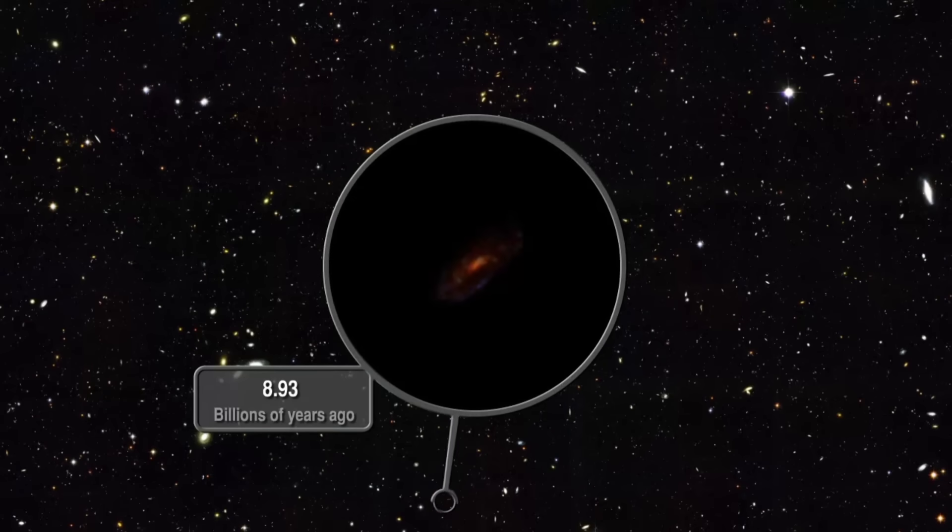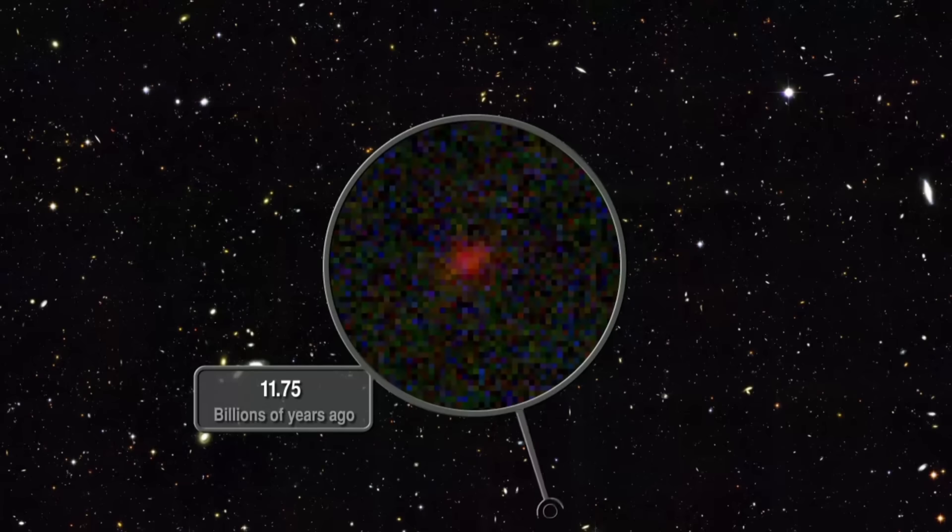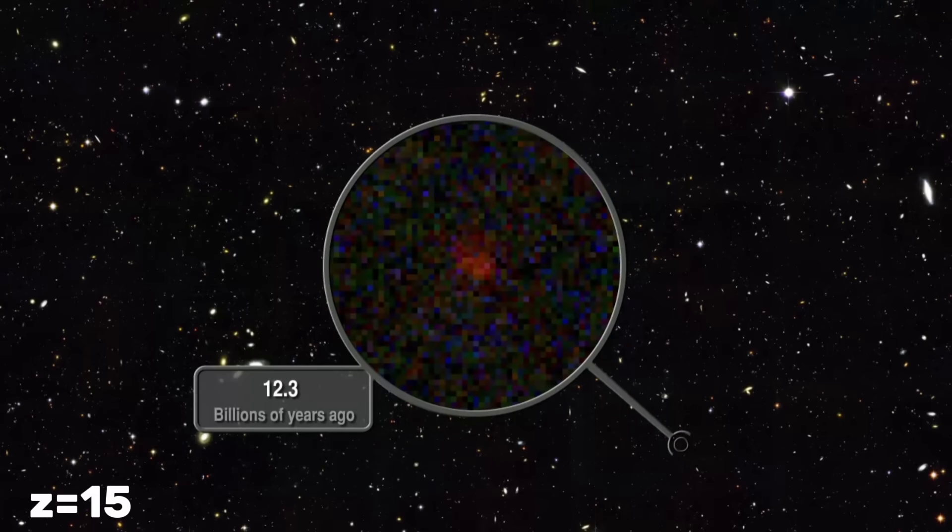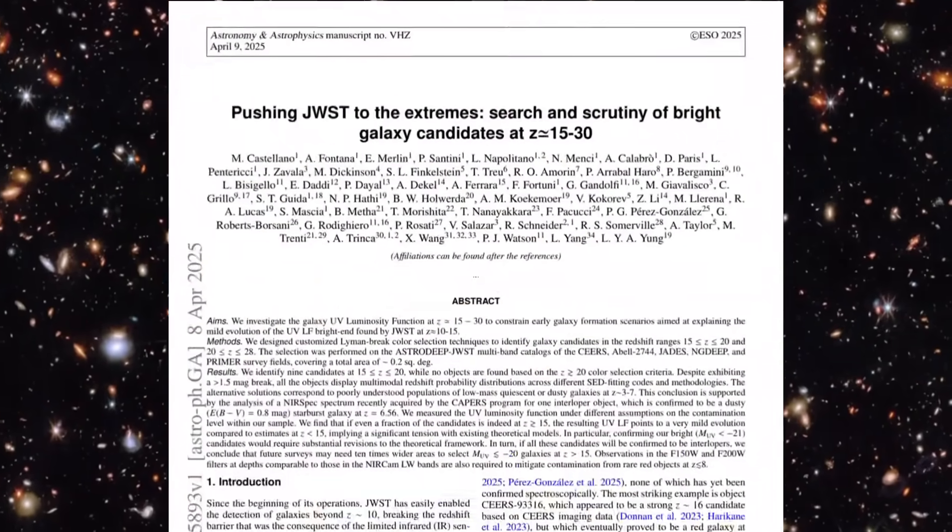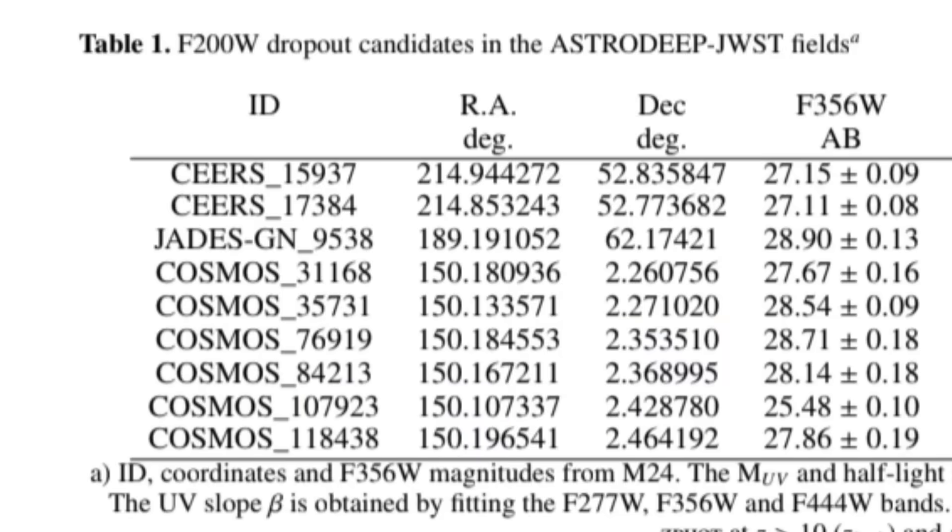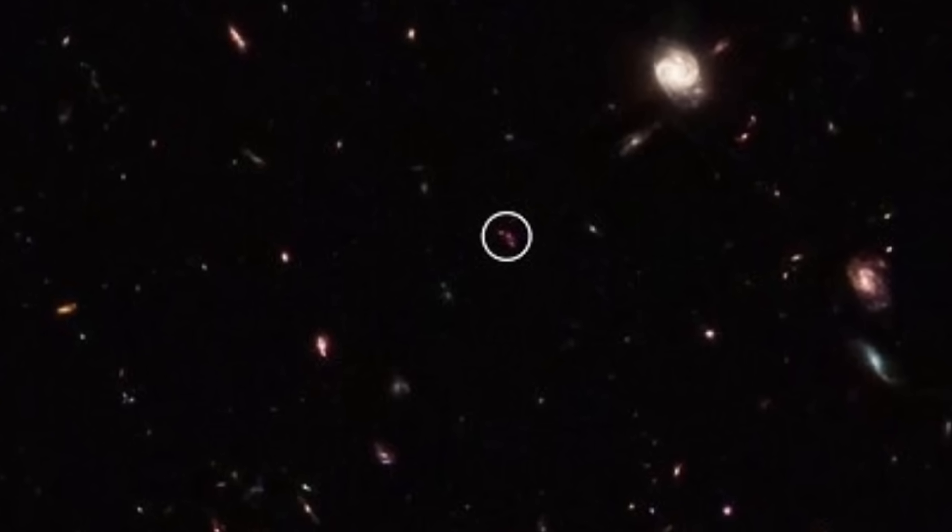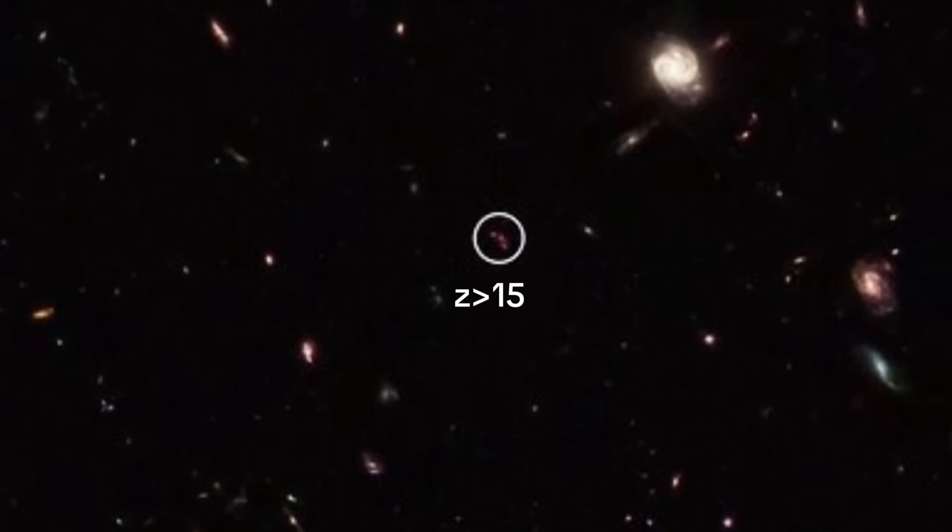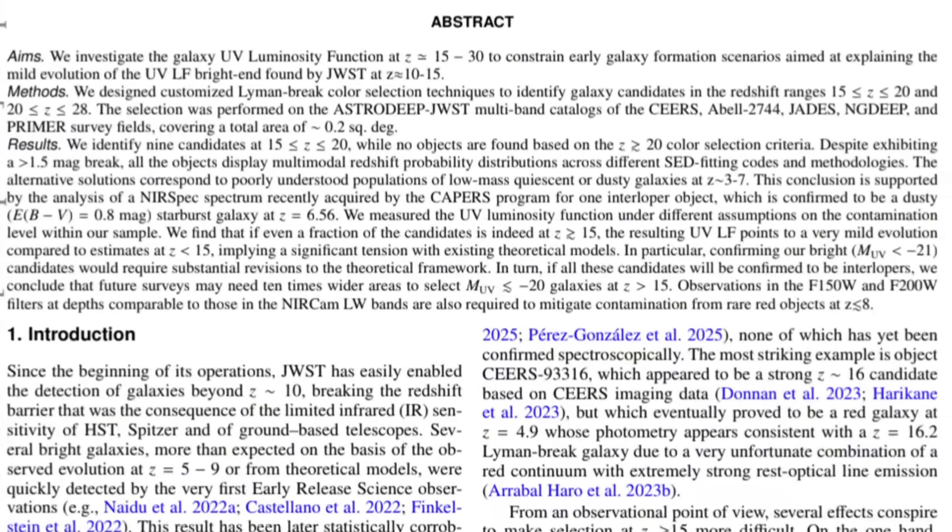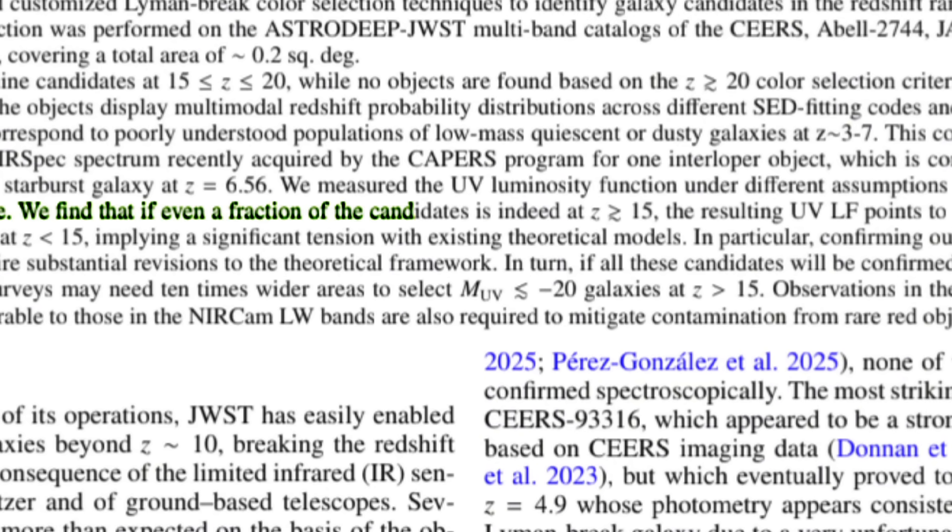By the way, the search for early massive galaxies does not end at a redshift of 15. Scientists have found a large number of galaxies at redshifts of 15 to 30. But some of these galaxies show multiple redshift values that need to be revised again with further spectroscopic testing. But some galaxies are strong candidates for redshifts greater than 15. And in new research, scientists suggested that if even a fraction of the candidates are actually at redshifts greater than 15, it means there is a significant tension with the existing theoretical models.